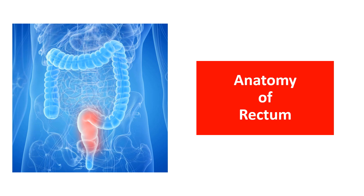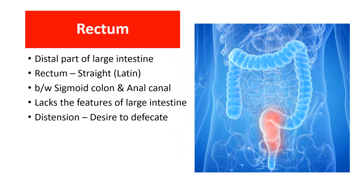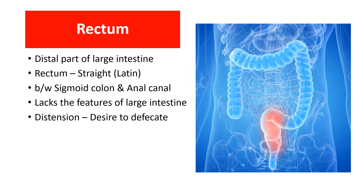Hello everyone, today we are going to see the anatomy of the rectum. The rectum is the distal part of the large intestine. Here you can see the ascending colon, transverse, descending, sigmoid, and then the rectum followed by the anal canal. The rectum is located between the sigmoid colon above and the anal canal below.